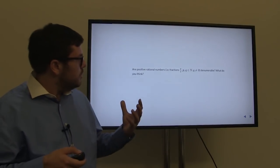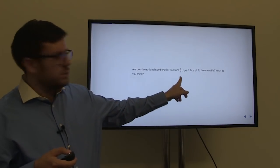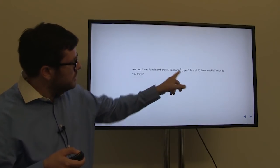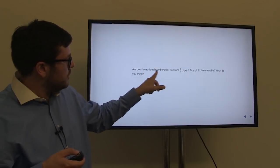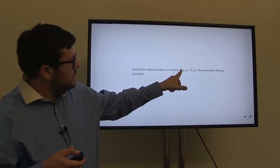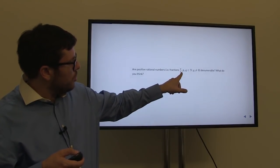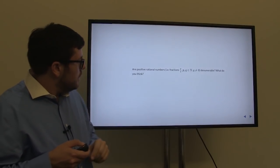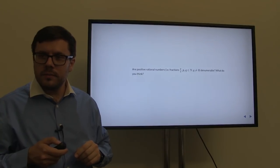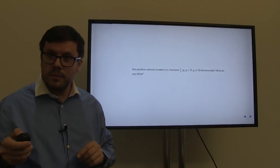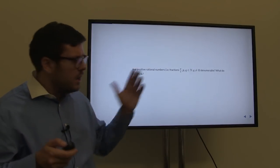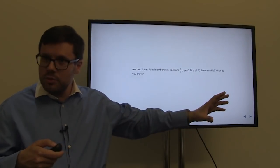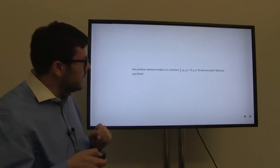What about rational numbers? Rational numbers are fractions — we have a numerator p and a denominator q, where q is not zero. Let us look at positive rational numbers where both numerator and denominator are natural numbers. Is the set of positive rationals denumerable? It is not entirely obvious. Can we actually enumerate all fractions? Can we put them in correspondence with natural numbers?